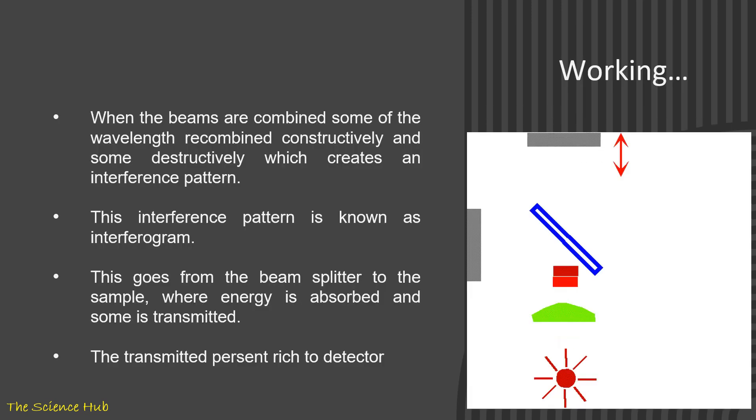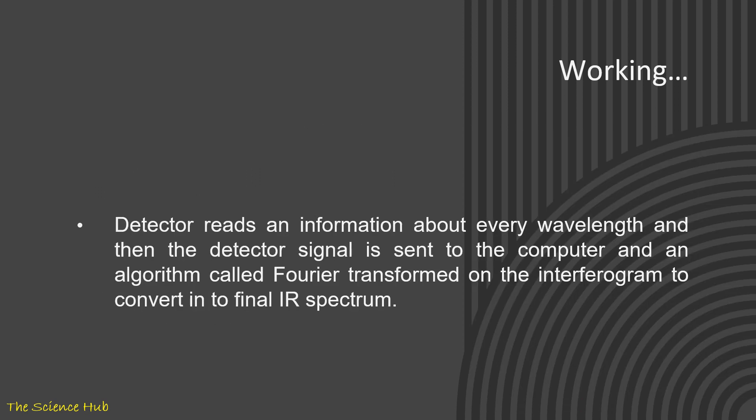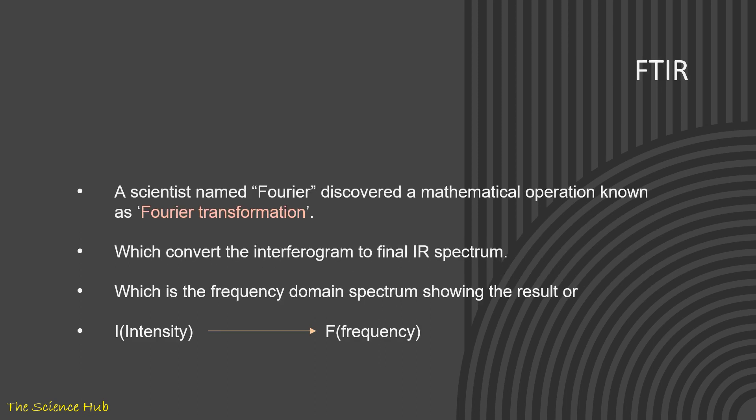When the beams are combined, some of the wavelengths recombine constructively and some destructively, which creates an interference pattern. This interference pattern is known as interferogram. This goes from the beam splitter to the sample, where energy is absorbed and some is transmitted. The transmitted percent reaches the detector. Detector detects information about every wavelength, and then the detector signal is sent to the computer, and an algorithm called Fourier transform on the interferogram converts it into the final IR spectrum. The scientist named Fourier discovered a mathematical operation known as Fourier transformation which converts the interferogram to final IR spectrum, which is frequency domain spectrum showing the result or intensity to frequency conversion.